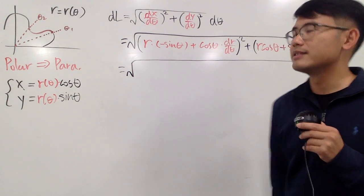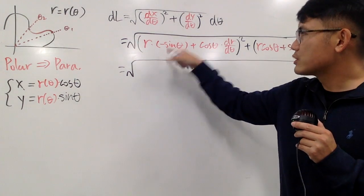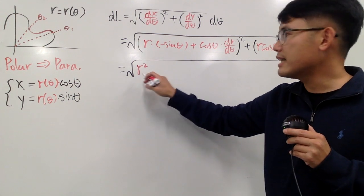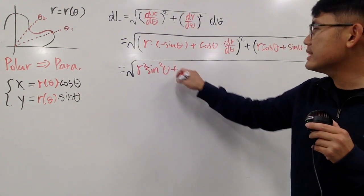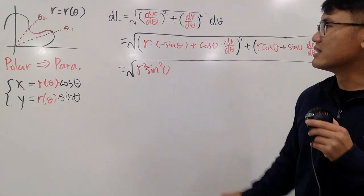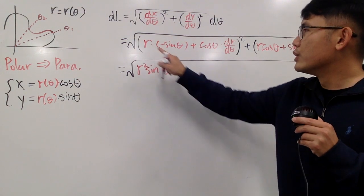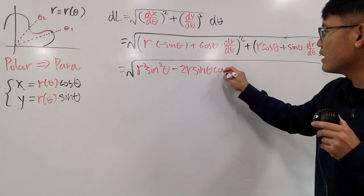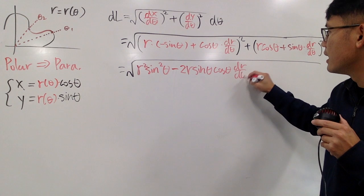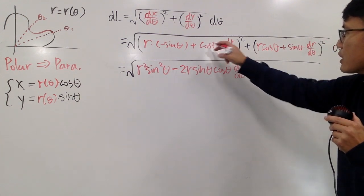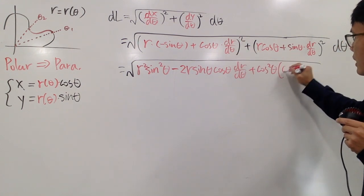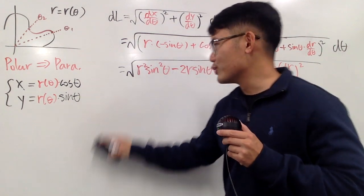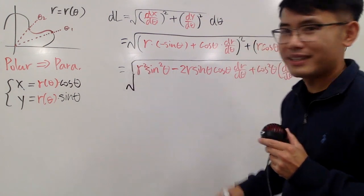Now we expand the expressions. The first squared binomial gives us: R² sin²θ — then we subtract 2R sinθ cosθ · (dR/dθ) — and then we add cos²θ · (dR/dθ)². Everything is under the square root, but I'll continue writing below since there isn't enough space to fit it all on one line.